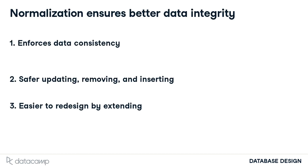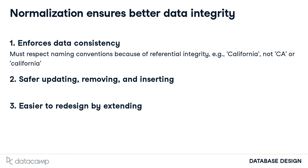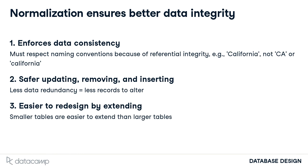Normalization ensures better data integrity through its design. First, it enforces data consistency. Data entry can get messy, and at times people will fill out fields differently. For example, when referring to California, someone might enter the initials CA. Since the states are already entered in a table, we can ensure naming conventions through referential integrity. Secondly, because duplicates are reduced, modification of any data becomes safer and simpler. Say you wanted to update the spelling of a state — you wouldn't have to find each record referring to the state. Instead, you can make that change in the states table by altering one record. From there, you can be confident that the new spelling will be enacted for all stores in that state. Lastly, since tables are smaller and organized more by object, it's easier to alter the database schema. You can extend a smaller table without having to alter a larger table holding all the vital data.